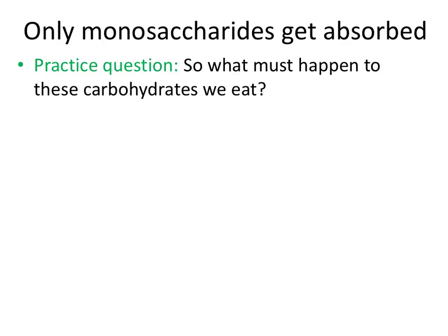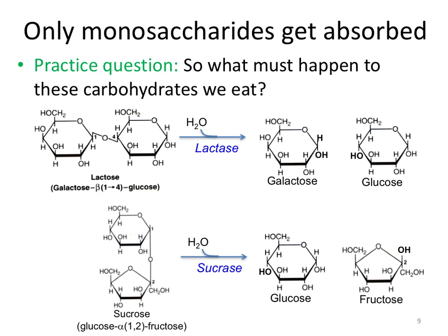The carbohydrates that we eat are primarily polymers of sugars or disaccharides, yet it is only the monosaccharides that can be absorbed into our intestinal enterocytes. So what must happen to these carbohydrates during chemical digestion? These polymers and disaccharides must be hydrolyzed to their monosaccharides.